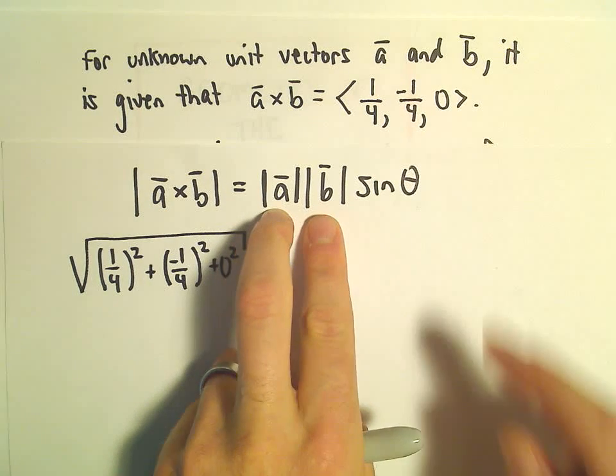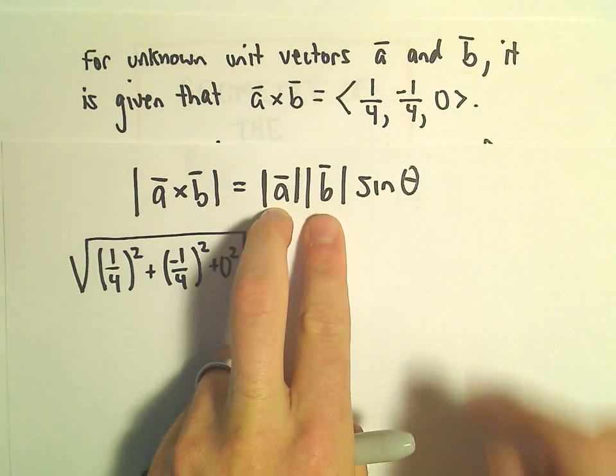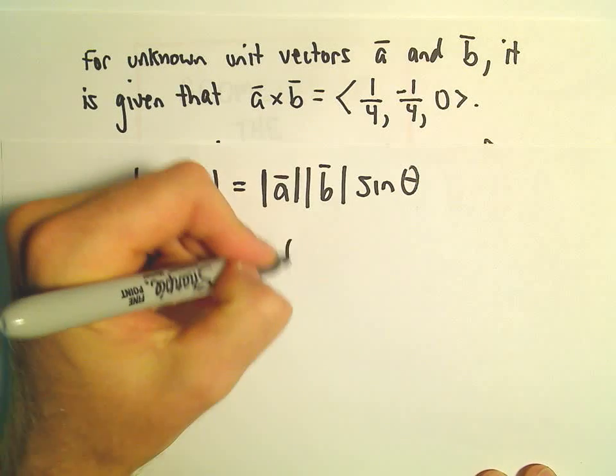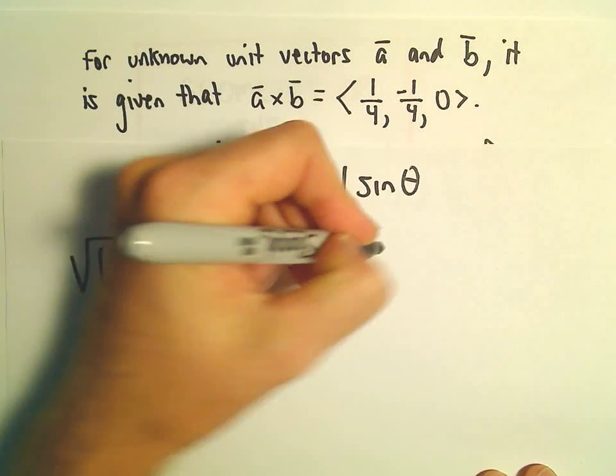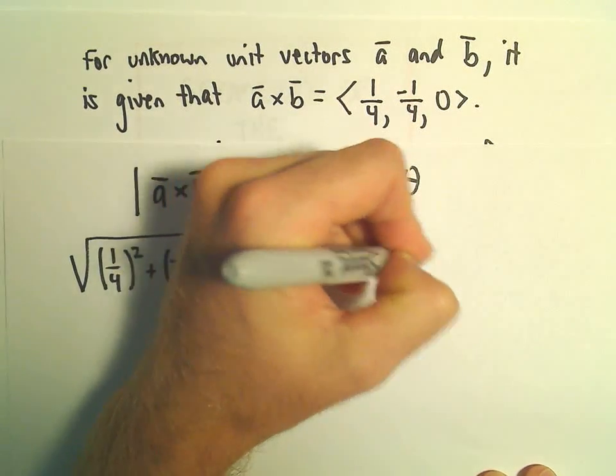By assumption, a and b are unit vectors. And if they're unit vectors, they both have length of one. So that'll make that easy for us.